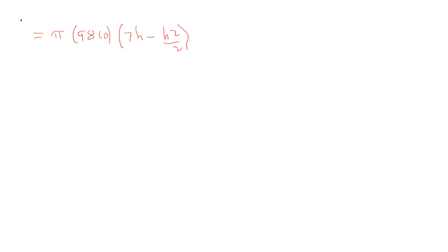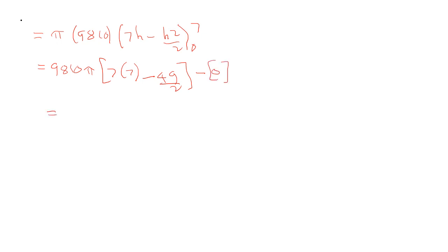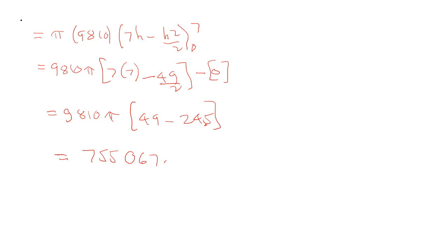Evaluating from 0 to 7: equals 9,810π times (7 times 7 minus 49 over 2) minus 0, equals 9,810π times (49 minus 24.5), equals 9,810π times 24.5, so W equals 755,067.85 newton-meters, or approximately 755.07 kilonewton-meters.